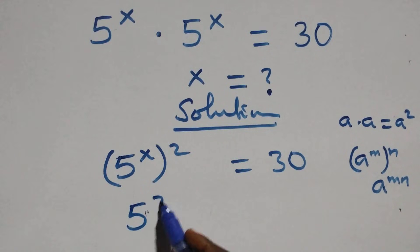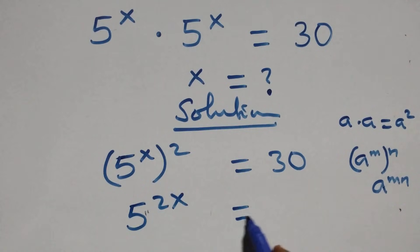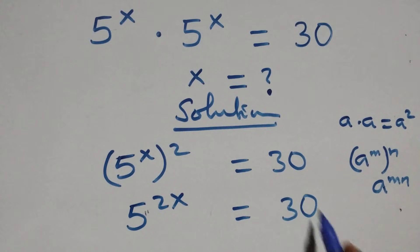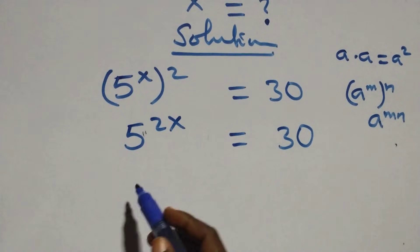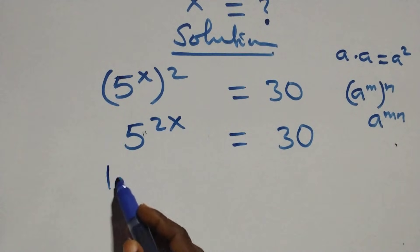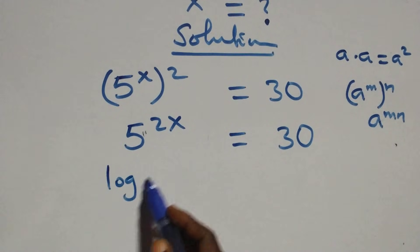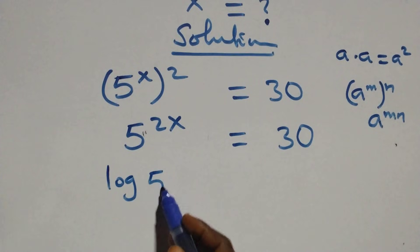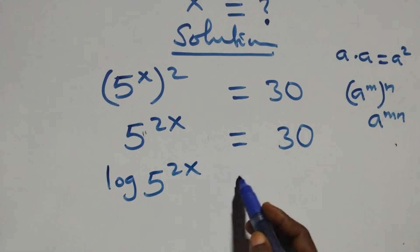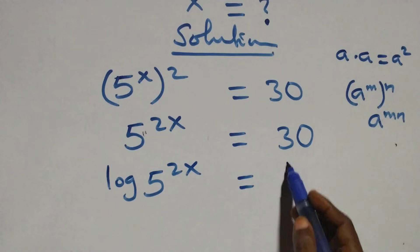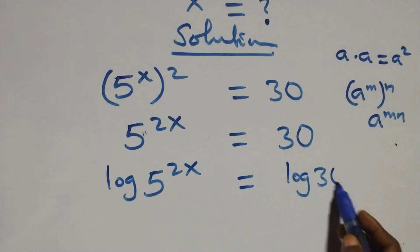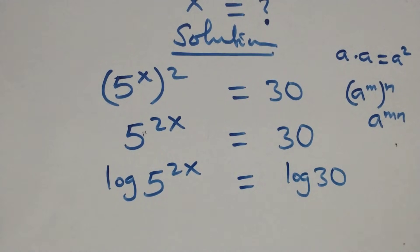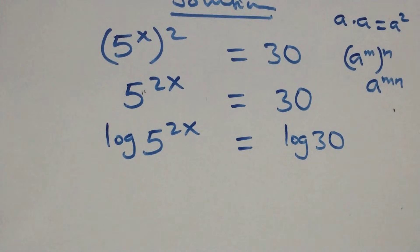So we have 5 raised to power 2x equals 30 on this side. The next step: take the log on both sides. That is, we have log of 5 raised to power 2x equals log 30.